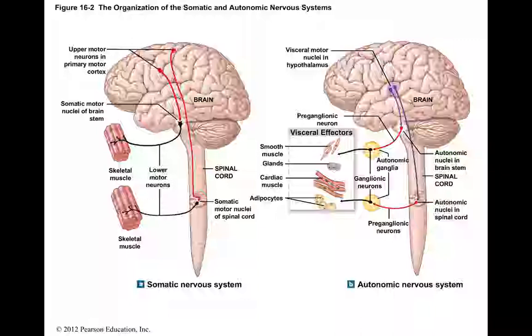Chapter 16 is about the autonomic nervous system. In the ANS, the command isn't going to skeletal muscle, so the upper motor neuron starts in different areas of the cortex. In the autonomic nervous system, there are two motor neurons instead of just one lower motor neuron. One motor neuron synapses onto a second motor neuron, and then that goes out to the effector. We call these the preganglionic neuron and the postganglionic neuron.